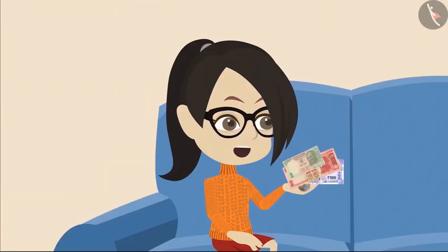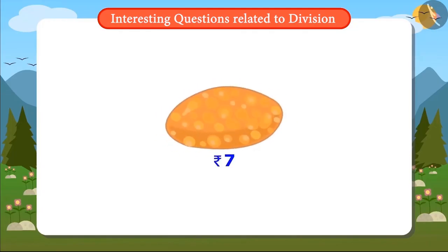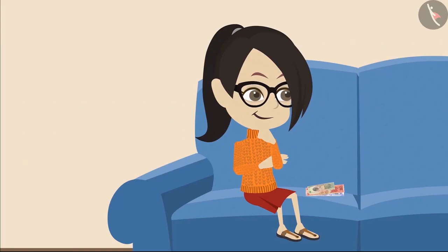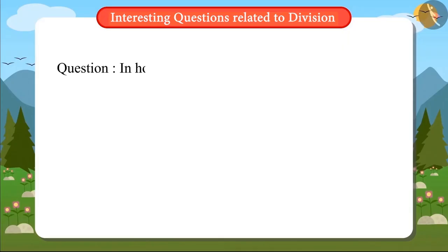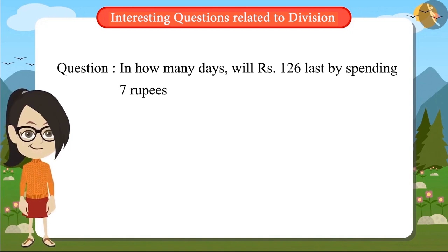From my school canteen, I buy one kachauri each for 7 rupees. So like this, every day I spend 7 rupees. Vandana now has to find out in how many days she will be able to spend 126 rupees by spending 7 rupees per day.